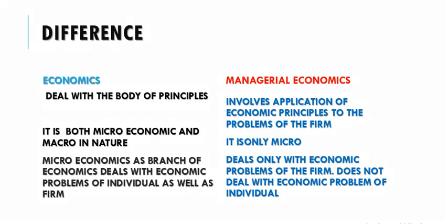Now we will see the differences between economics and managerial economics. Economics deals with the body of principles, while managerial economics uses those principles in solving the problems of the firm. Economics is both micro and macro, but managerial economics is only micro, because it deals with the problems of the firm. Microeconomics deals with the economic problems of both the individual and the firm, but managerial economics deals only with the economic problems of the firm — it does not deal with the economic problems of the individual.